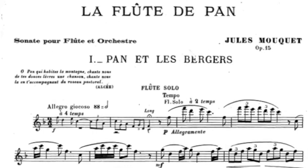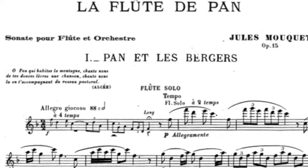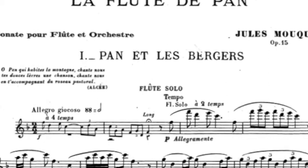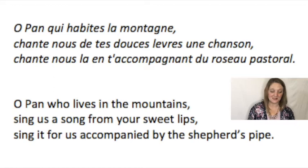This is why you'll find many flute pieces that have a connection to Pan — it's because of his flute playing. The first movement is titled Pan and the Shepherds. The composer included a poem at the beginning of each movement to serve as inspiration for the performer. Here is the translation from French to English: 'Oh Pan who lives in the mountains, sing us a song from your sweet lips, sing it to us accompanied by the shepherd's pipe.' This provides a background for what the piece should sound like and what it should be depicting, and knowing Pan's character, we want to incorporate that into our performance and interpretation.